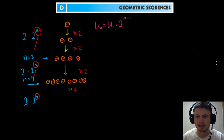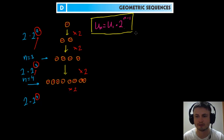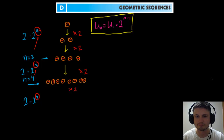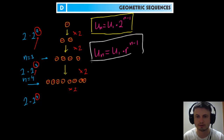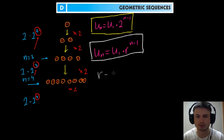The power is related to the number n, so for the fourth number it's the third power and for the third number it's the second power — it's two to the power of n minus one. In a nutshell, geometric sequences describe a pattern where a number is multiplied by a constant — not added like in arithmetic sequences. In your book it's written as un equals u1 times r to the power of n minus one, and the letter r refers to this constant multiplier.